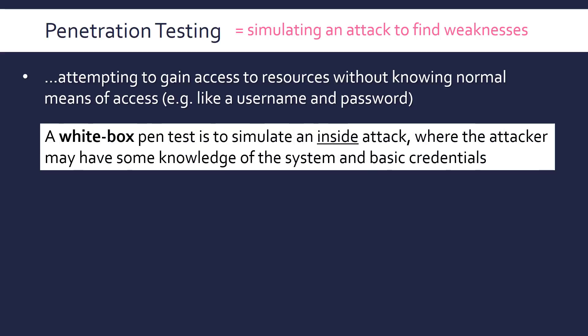There are two types of pen tests. A white box pen test simulates an inside attack, where the attacker may have some knowledge of the system and may have basic credentials. So you might have a basic username and password, and there may be an administrator account or a database you're not meant to access, as normal employees won't be able to. You have some knowledge of how it works, so you're pretending you're an employee of the company. Penetration testing is usually done by an external company.